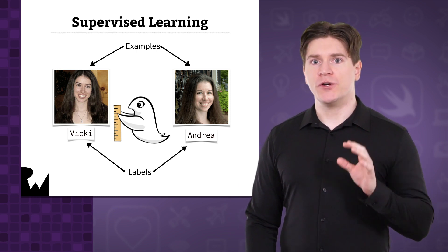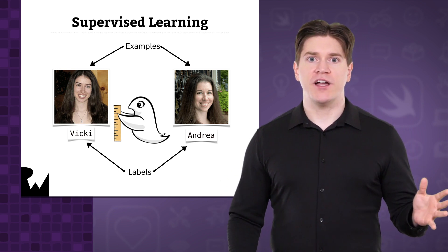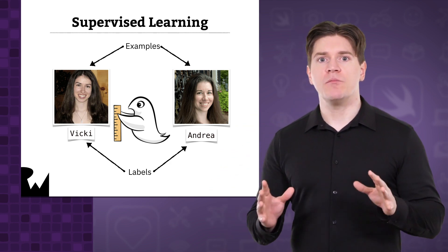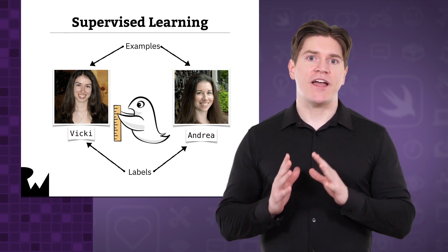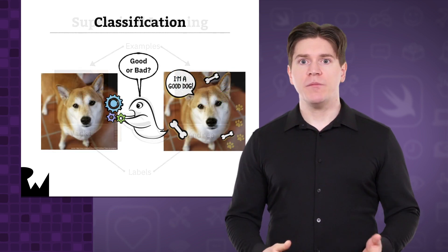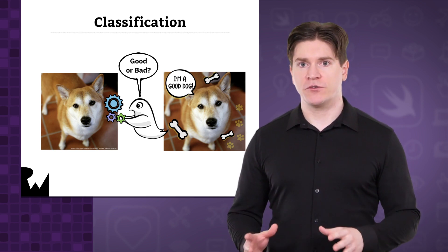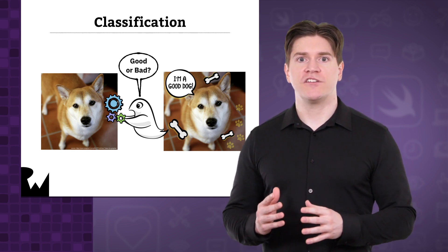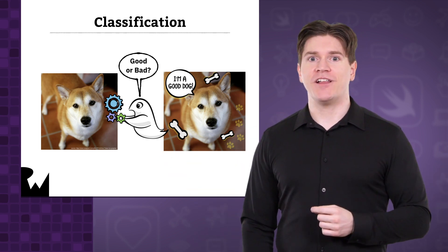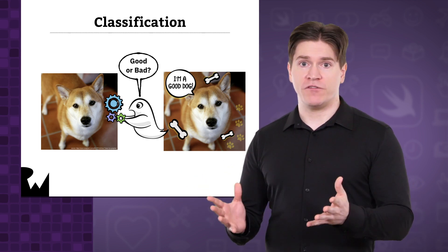The most common type of machine learning practice today is supervised learning, in which the learning process is guided by a human — in this course that'll be you — that tells the computer what it should learn and how. With supervised learning, you train the model by giving it examples to look at, such as photos of your friends, but you also tell it what those examples represent so that the model can learn to tell the difference between them. These labels tell the model what or who is actually in those photos. Supervised training always needs labeled data.